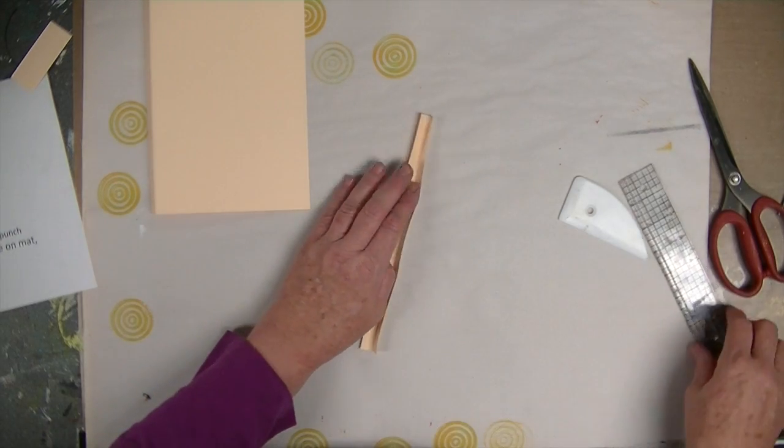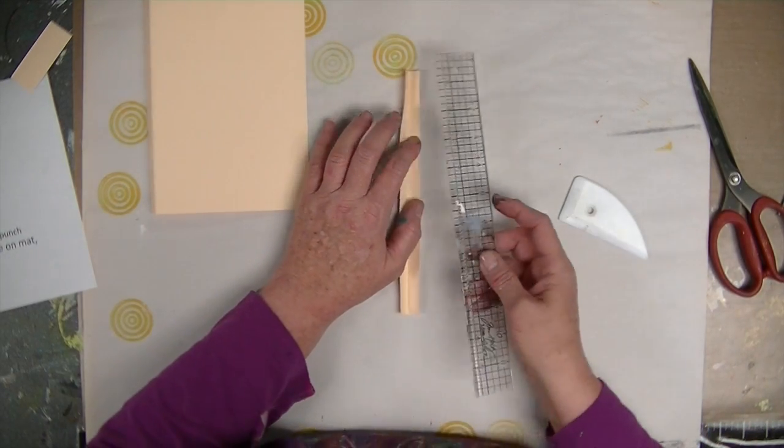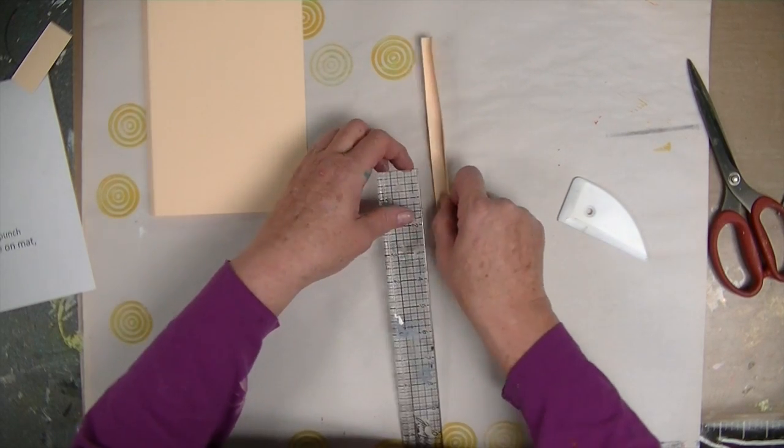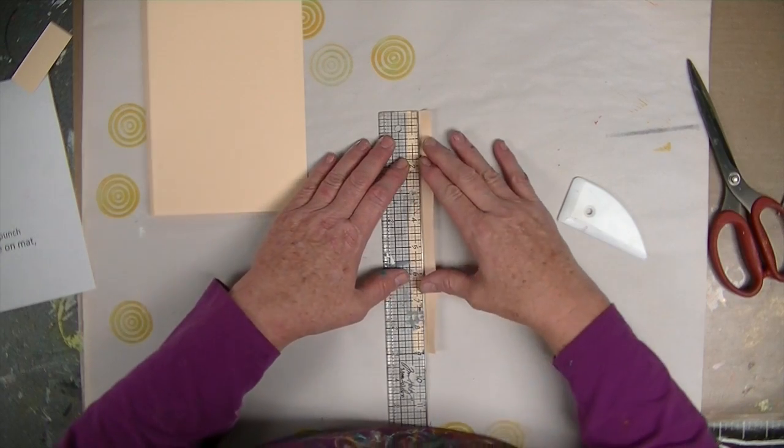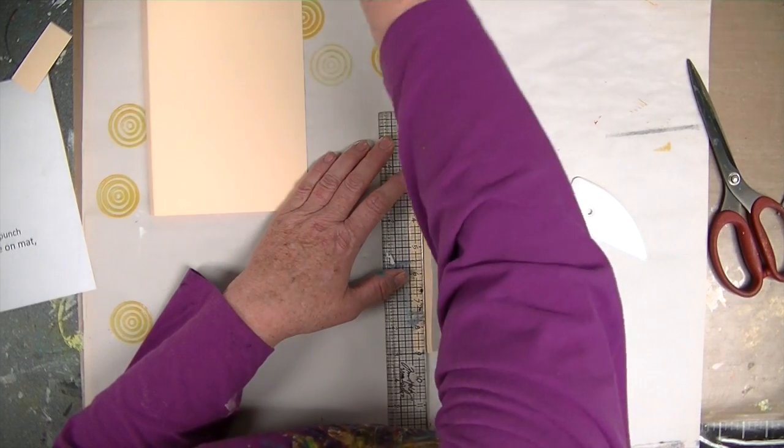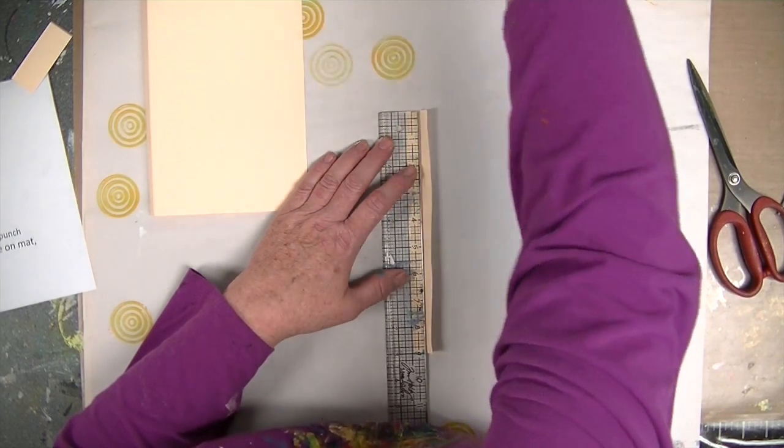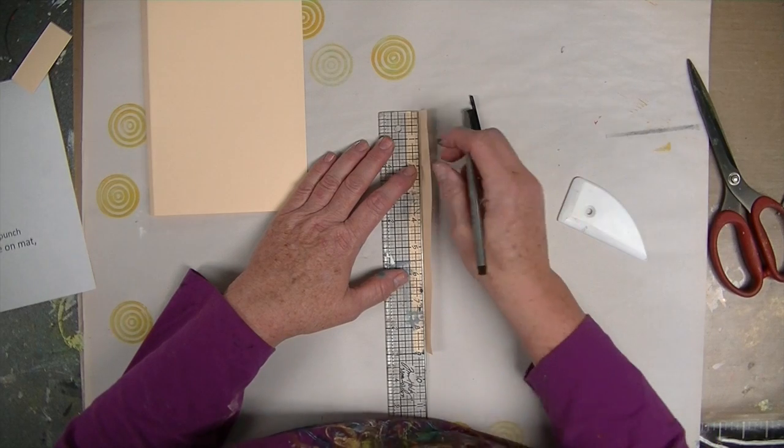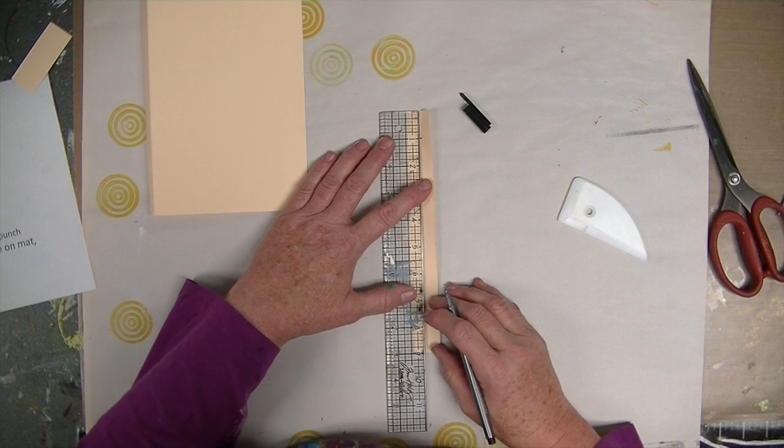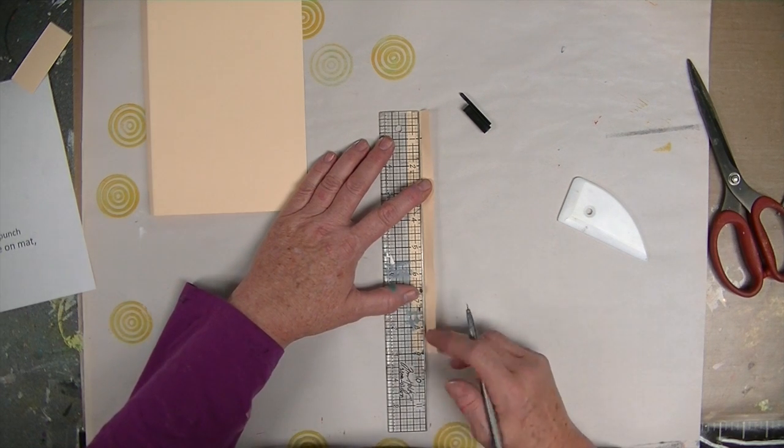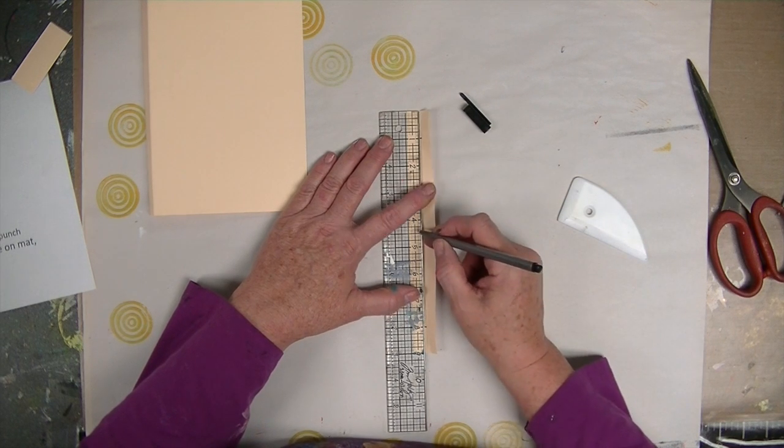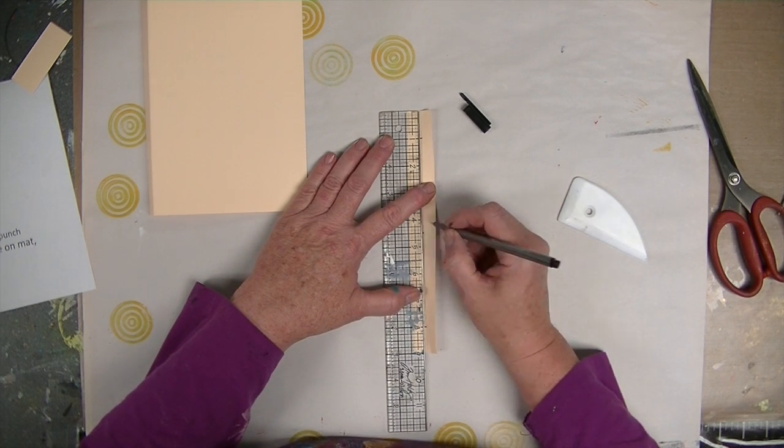Now you want to mark an inch from the top and the bottom on your template. I'm going to make a mark at an inch there, and this is nine inches long so I'm going to come up to eight inches and make a mark there. Half of nine is four and a half, so I'm going to make a mark there in the center.